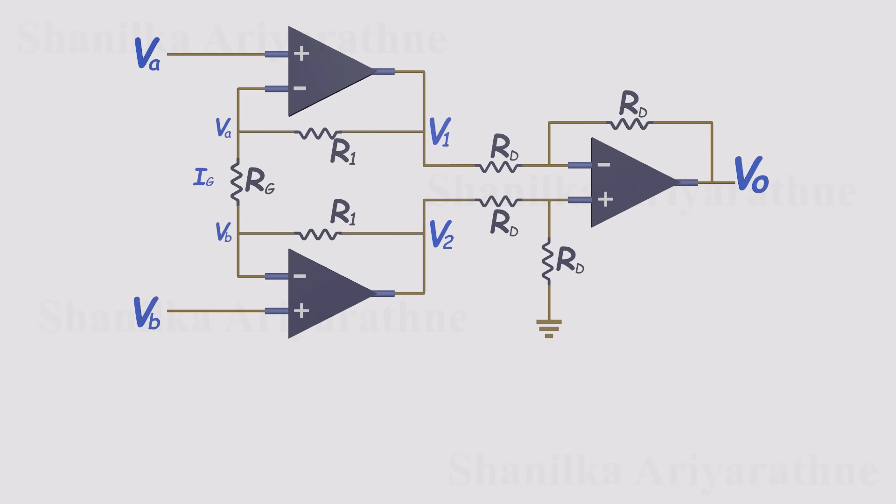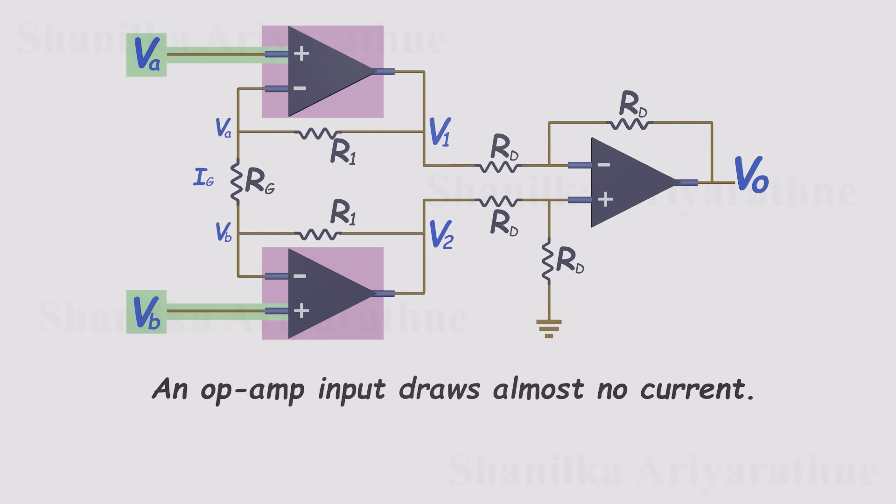First, look at the two op amps at the input. The signals feed directly into them. No extra branches. No current being drained away through resistors. Back in my op amp introduction video, we learned that an op amp input draws almost no current. It just senses the voltage.